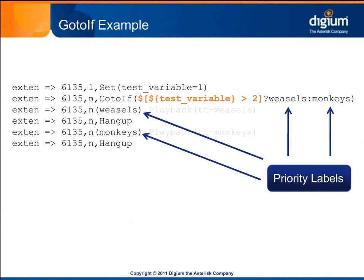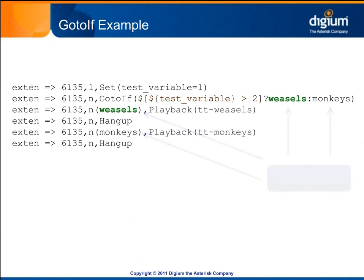The expression evaluates whether the value of test variable is greater than 2. If true, it will route to the weasels priority. If false, it will route to the priority labeled monkeys. Because we set the value of test variable to 1, this will evaluate to false. The call is routed to the monkeys priority, where the ttweasels sound file is played.